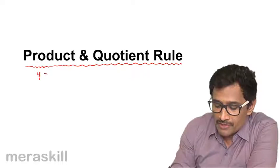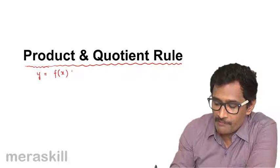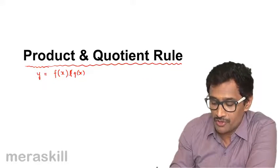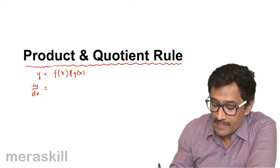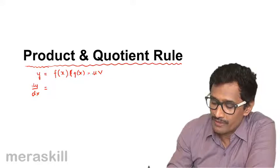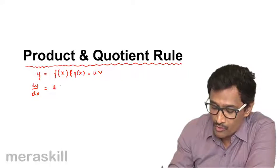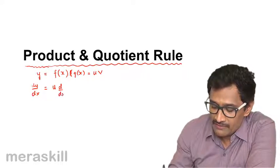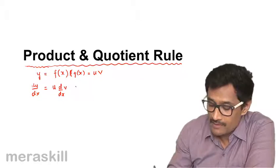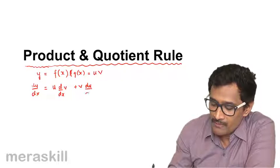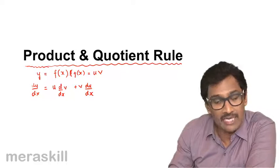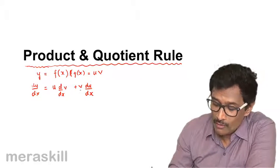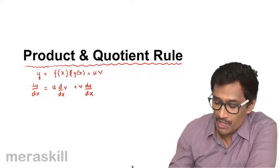Suppose you have a function y which is a product of f(x) and g(x), and you need to find dy/dx. In this case, suppose y = u · v. You can write it as u · (dv/dx) + v · (du/dx). That means you keep one function as it is, multiplied by the derivative of the second, and vice versa. This is the product rule.